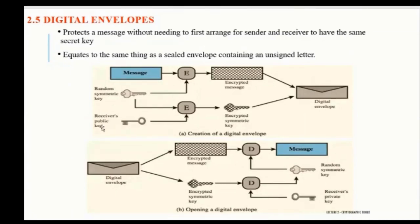Then I'm going to take the public key. Using the public key, I'm going to encrypt two things: the encrypted message and the symmetric key. So two encrypted things are created and we put them together in a box or cover — this is called the digital envelope. The digital envelope is then sent to the receiver.